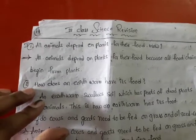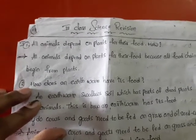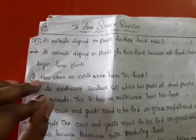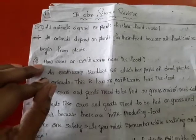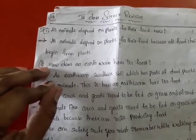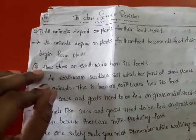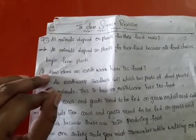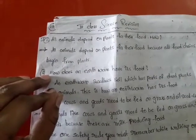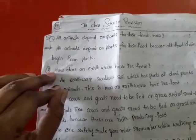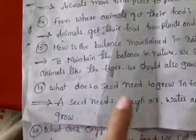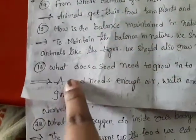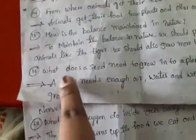Third class science revision. Already in the previous class we learned 15 questions and answers. Today we will learn the remaining 5 questions and answers — questions 16 through 20. Now read the 16th question and answer.